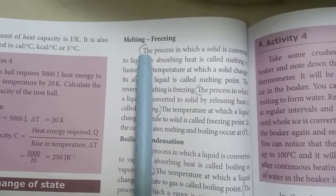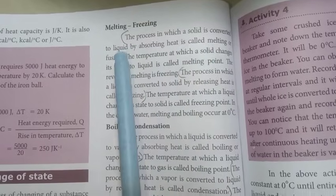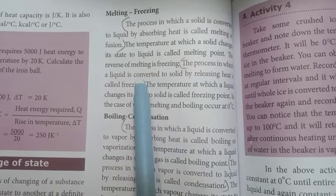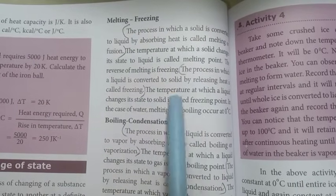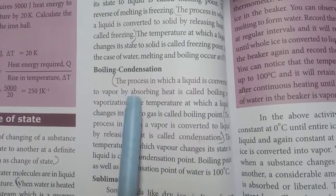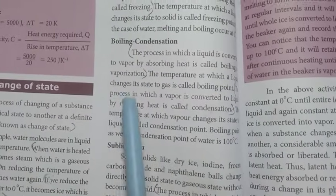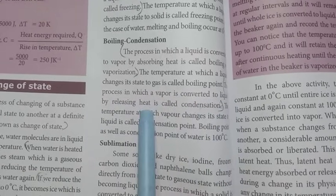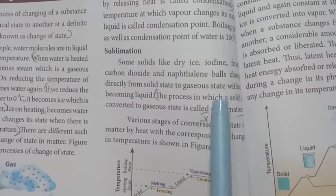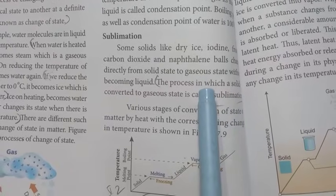Melting and freezing: Melting is the process in which a solid is converted to liquid by absorbing heat is called melting or fusion. The process in which a liquid is converted to solid by releasing heat is called freezing. Boiling condensation: The process in which a liquid is converted to vapor by absorbing heat is called boiling or vaporization. The process in which vapor is converted to liquid by releasing heat is called condensation. Sublimation: The process in which a solid is converted to gaseous state is called sublimation.